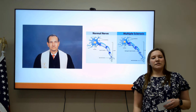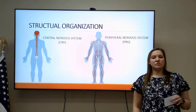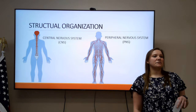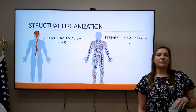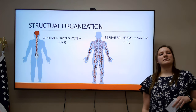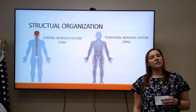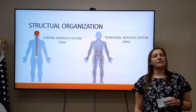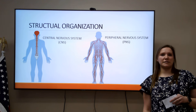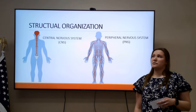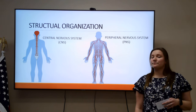So the nervous system can be composed into two separate systems. You have the central nervous system, which is the brain and the spinal cord, and you have the peripheral nervous system, which is the rest of the nerves throughout the body.